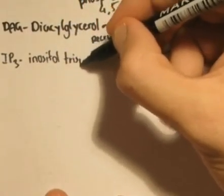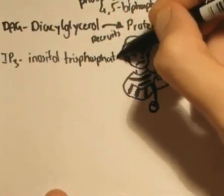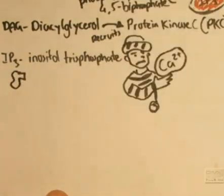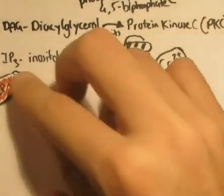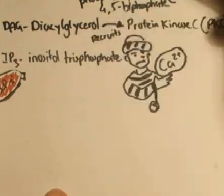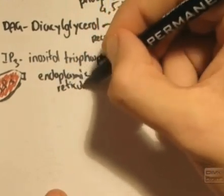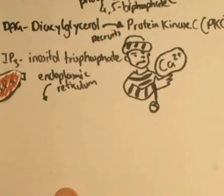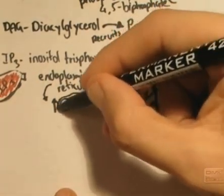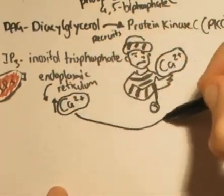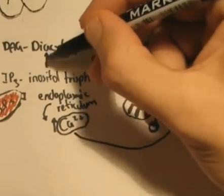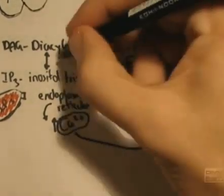IP3 stands for inositol triphosphate. It travels in the cytosol and binds to the endoplasmic reticulum receptors. Binding of IP3 to receptors on the endoplasmic reticulum increases the release of calcium ions in the cytosol, thus enabling specific function of DAG, the recruitment of PKC. And this makes DAG and IP3 have a good relationship.